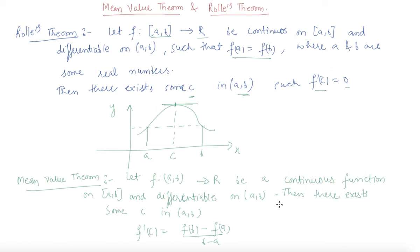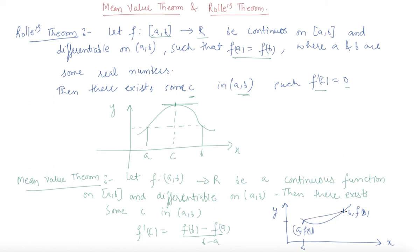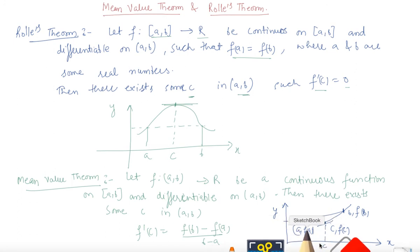Let me draw the plot of this function. Let's say this is a and the function value is f(a), so this point is (a, f(a)). This is your x-axis, this is your y-axis. And here is some point b where the function's value is f(b). What the mean value theorem states is that at some point c, f'(c) will be equal to f(b) minus f(a) upon b minus a.